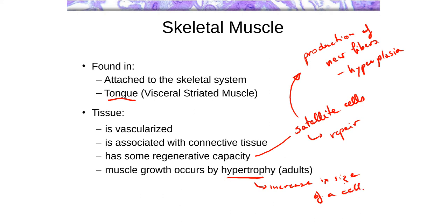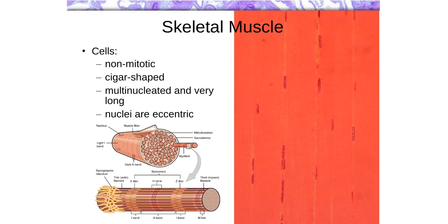In repair, satellite cells fuse with damaged cells, which produces an increase in the size of the damaged cell simply because you have more satellite cells fusing with it, generating a larger cell in the end. So that's the tissue itself. Let's take a look at the cells.